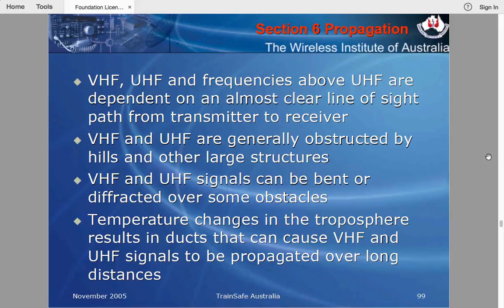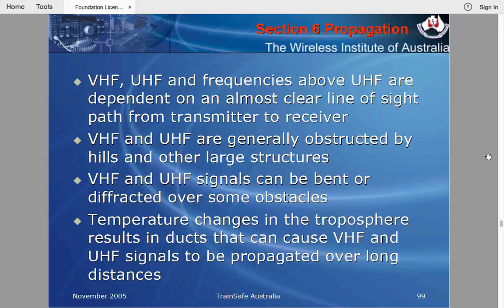On VHF, UHF, and frequencies above, propagation depends on almost a clear line-of-sight path from the transmitter to the receiver — the ionosphere will not refract VHF or UHF signals. VHF and UHF are generally obstructed by hills and large obstacles, which is why we have amateur repeaters placed on hilltops. Two cars communicating directly might only achieve 12 to 20 km range, but using a hilltop repeater extends that range considerably.